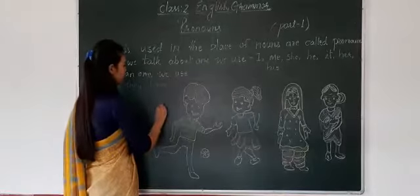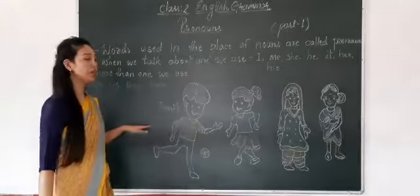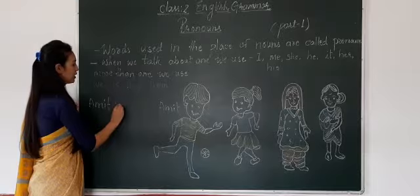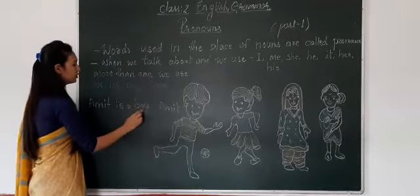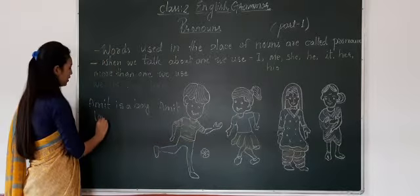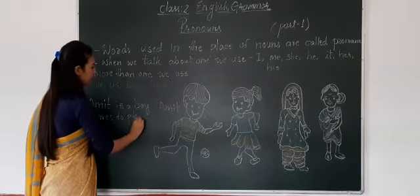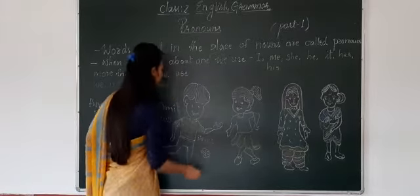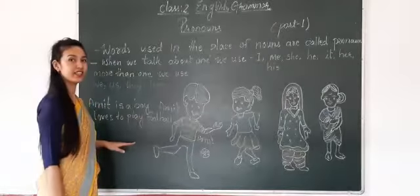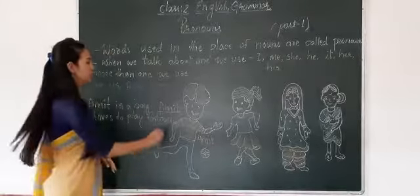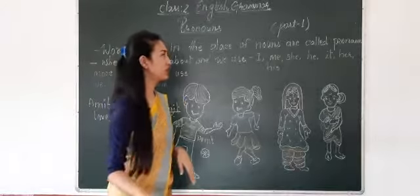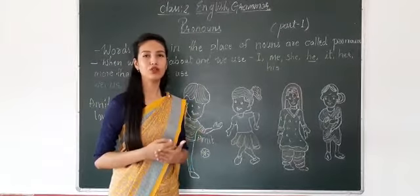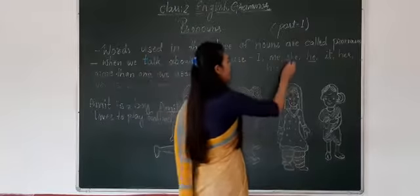For example: Amit is a boy. Amit loves to play. Instead of repeating 'Amit' again and again, since Amit is male, we use 'he.' Amit is a boy — he is male, so we have to use 'he.' When we are speaking about a male, we use 'he.'